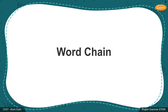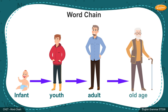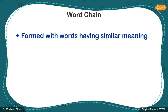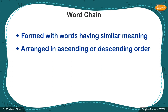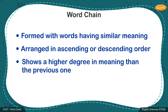Word chains can be formed in a number of ways, depending on a specified sequence based on certain characteristics. A typical word chain is usually formed with words having similar meaning, when arranged in an ascending or descending order. Each subsequent word shows a higher degree in meaning than the previous one.